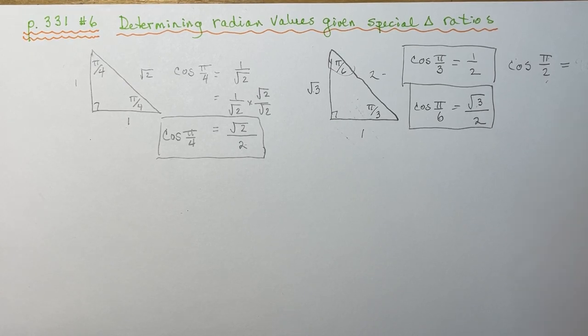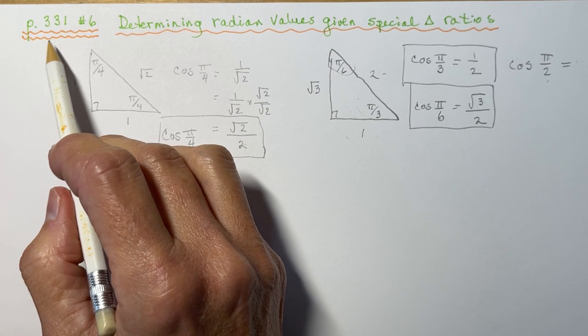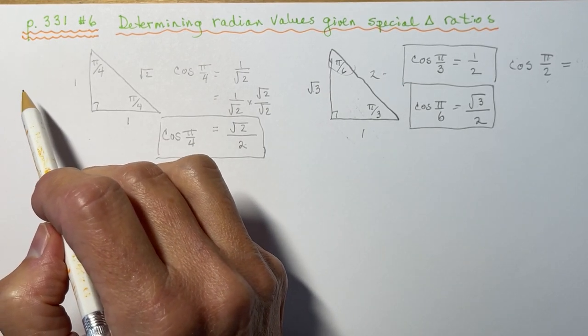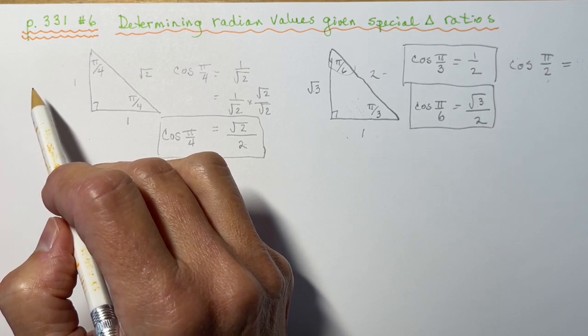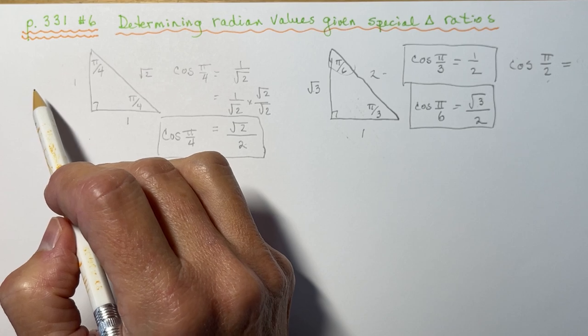In this video, I'm going to do page 331, number 6, from the Nelson's Advanced Functions textbook. The question asks you, for each of the following values of cos theta, determine the radian value of theta if theta is between pi and 2 pi.